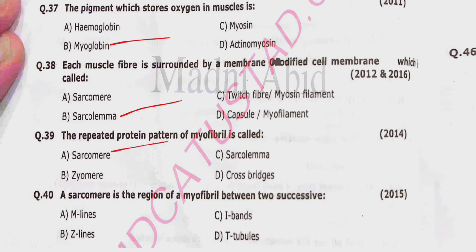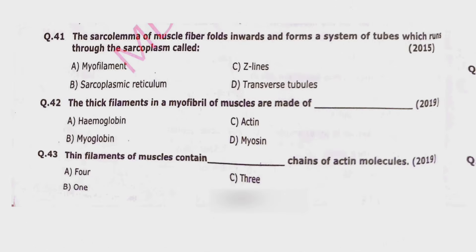Question 40: A sarcomere is the region of a myofibril between two successive M lines, Z lines, I bands, or T tubules. Correct option is beta — Z lines. Question 41: The sarcolemma of muscle fibers folds inward and forms a system of tubes which runs through the sarcoplasm — these are called myofilaments, sarcoplasmic reticulum, Z lines, or transverse tubules. Correct option is delta — transverse tubules.